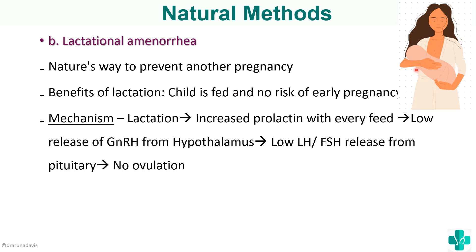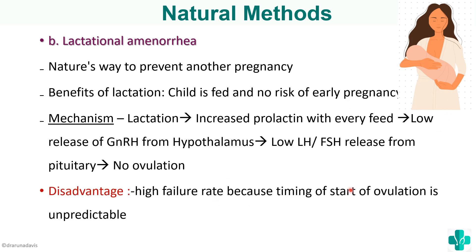The mechanism of lactational amenorrhea: during lactation there is increased prolactin with every feed. Because of this increased prolactin there will be low release of GnRH from the hypothalamus. Because there is low GnRH, there will be decreased LH and FSH, and thus decreased effect on the ovaries, resulting in no ovulation. The disadvantage is a high failure rate because the timing of the start of ovulation is unpredictable.